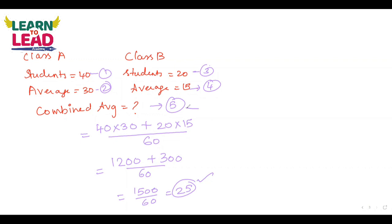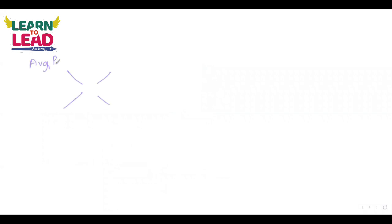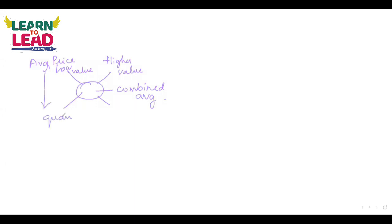This is how we solve combined averages. The center value is the combined average. The quantities can be number of students, number of liters, or kilograms. For example, comparing two petrol prices — price and quantity (liters) are involved. These quantities can be students, liters, or kilograms. All of these are used in combined average problems.